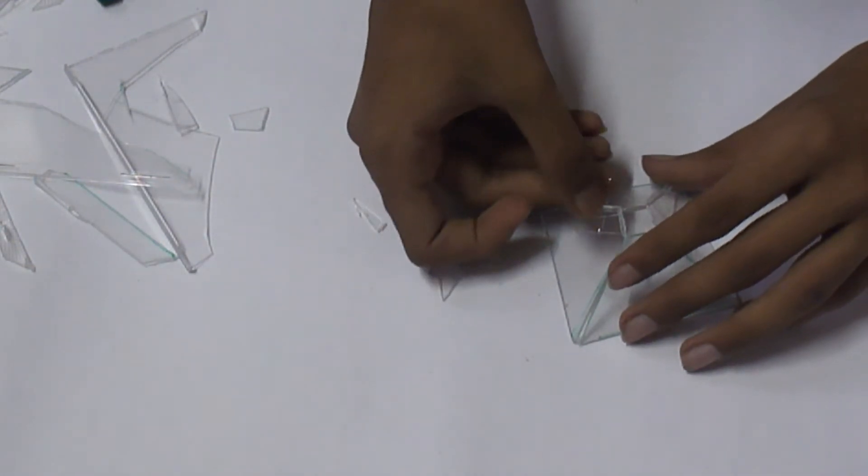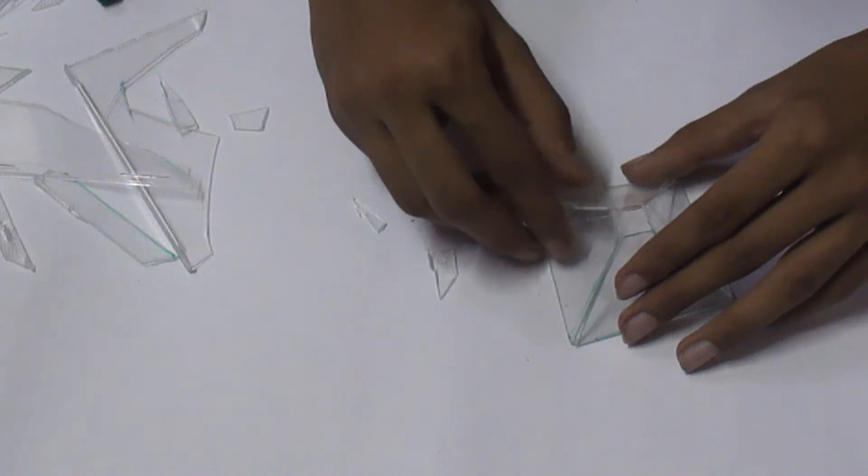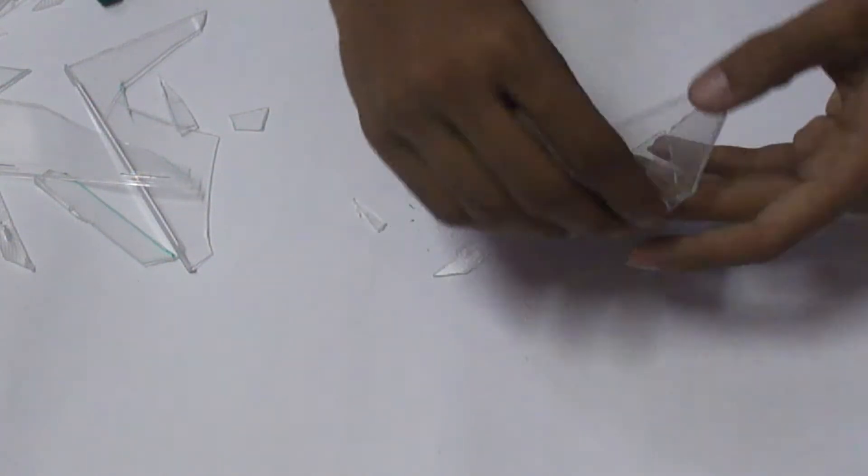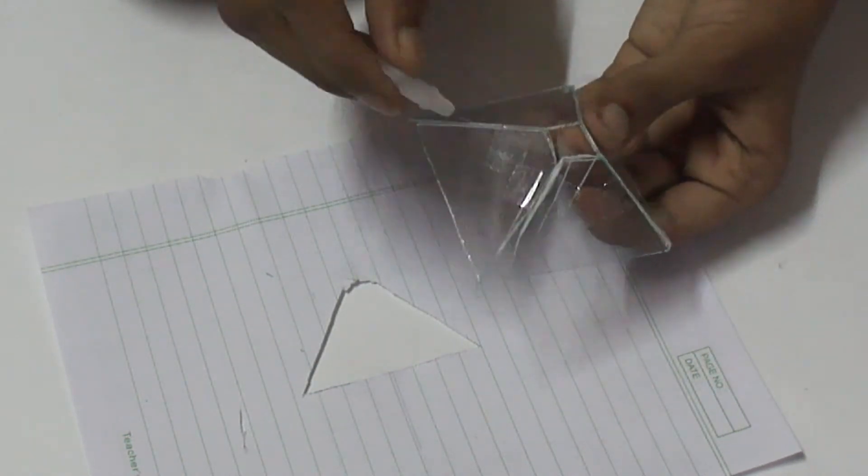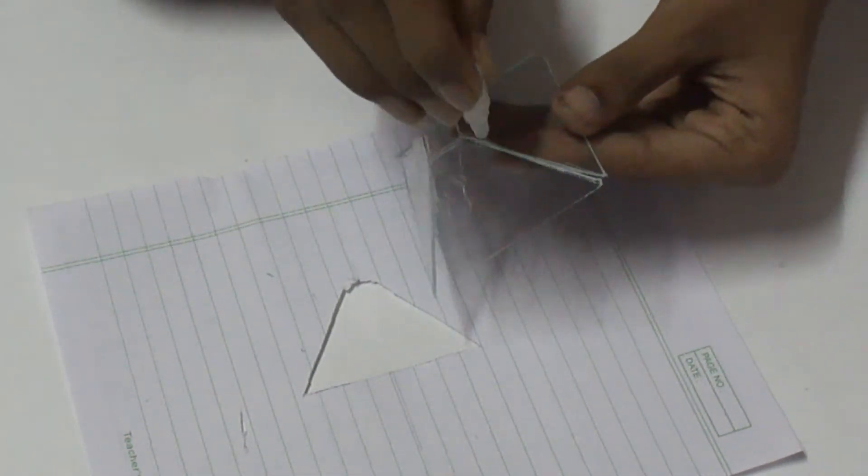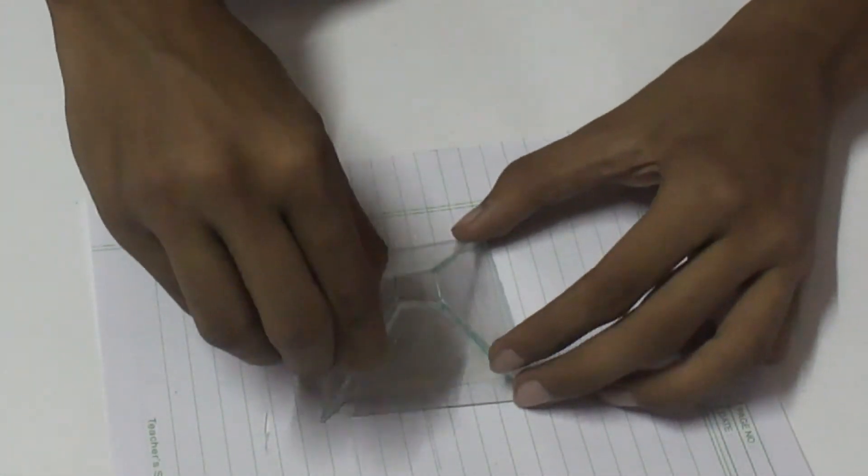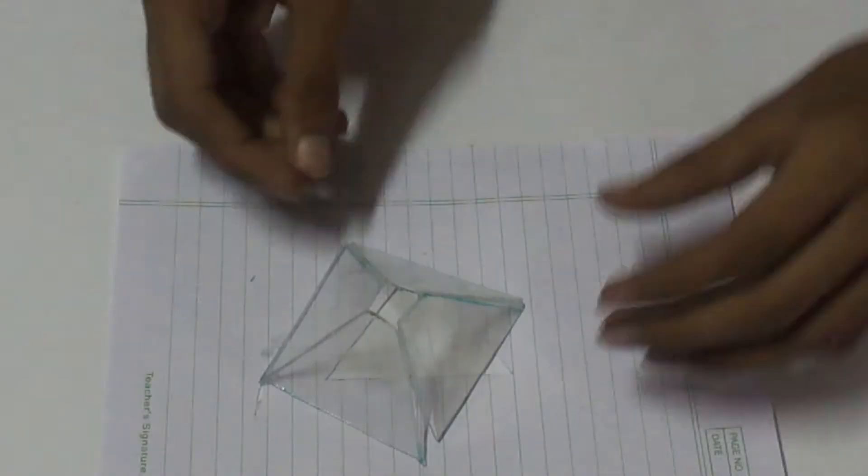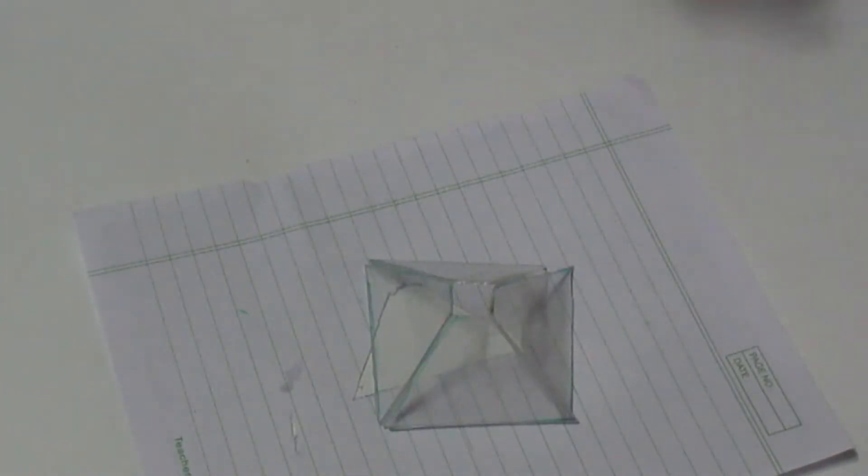At first, I'll join this with tape, cellophane tape, and then I'll add glue to make it stronger. And now I'll remove this, and there you go. It's now ready.